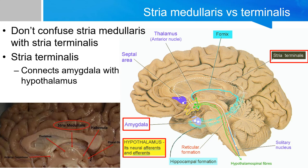There is another term similar in name: the stria terminalis. The stria terminalis is a completely different structure that connects the amygdala with the hypothalamus, and it travels lateral to the thalamus. Do not confuse the stria terminalis with the stria medullaris.